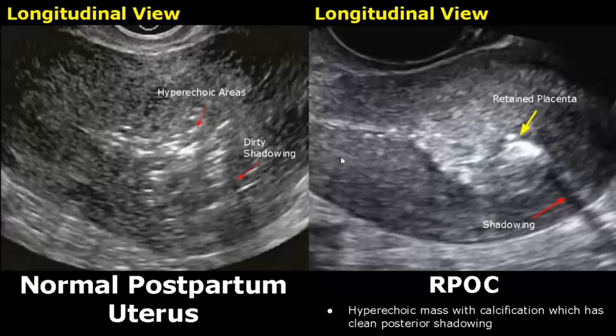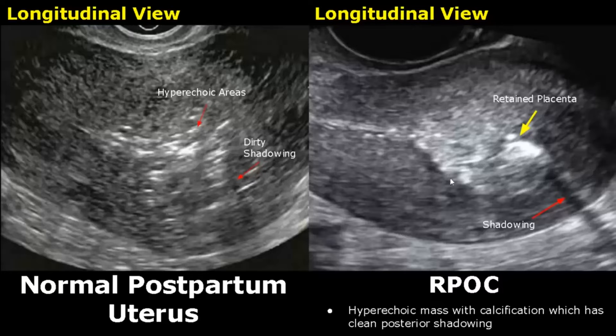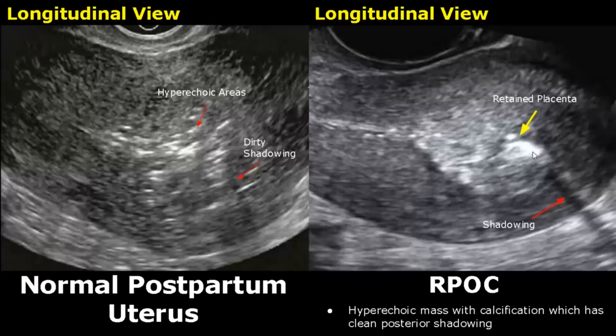These are transvaginal views of postpartum uterus and RPOC. Here we see some hyperechoic areas with dirty shadowing, meaning air is present — this is a normal appearance. In this case of RPOC, there is a hyperechoic mass with calcification. This clean black shadowing confirms calcification, and calcified areas indicate a retained placenta, which is helpful in diagnosis.